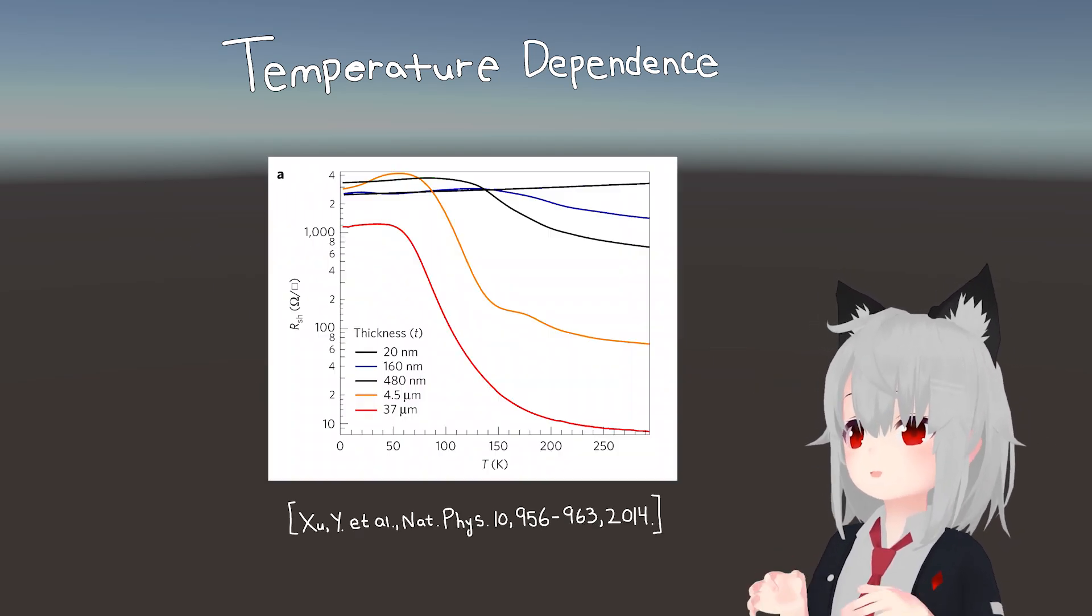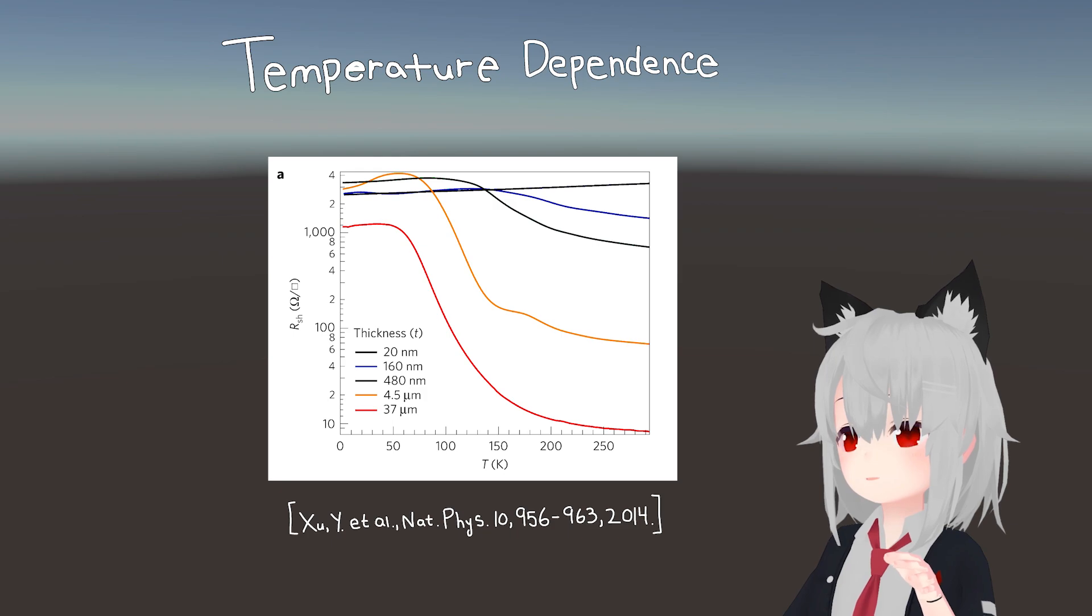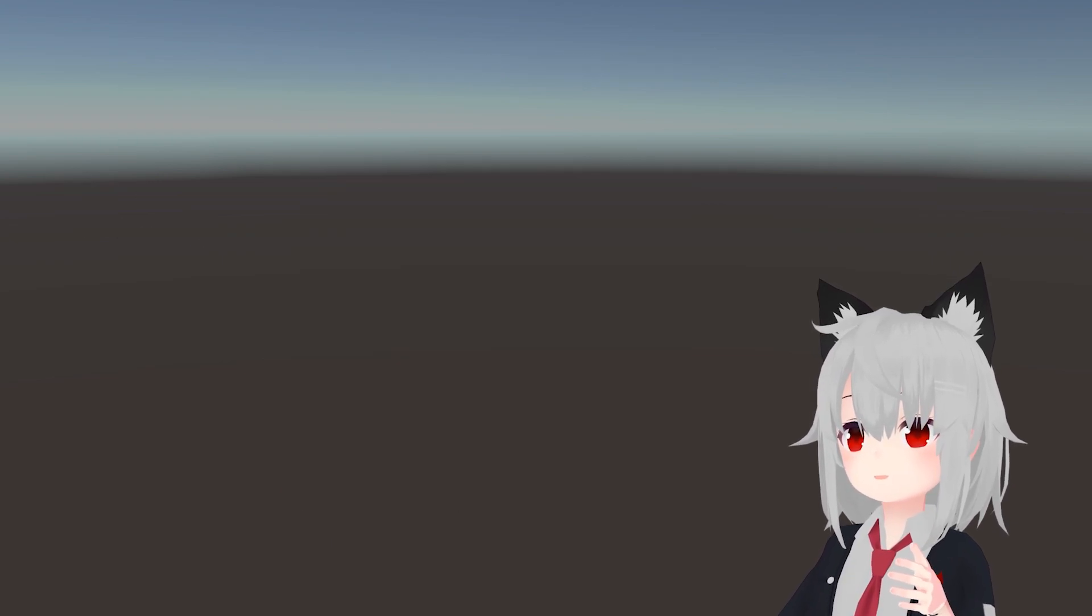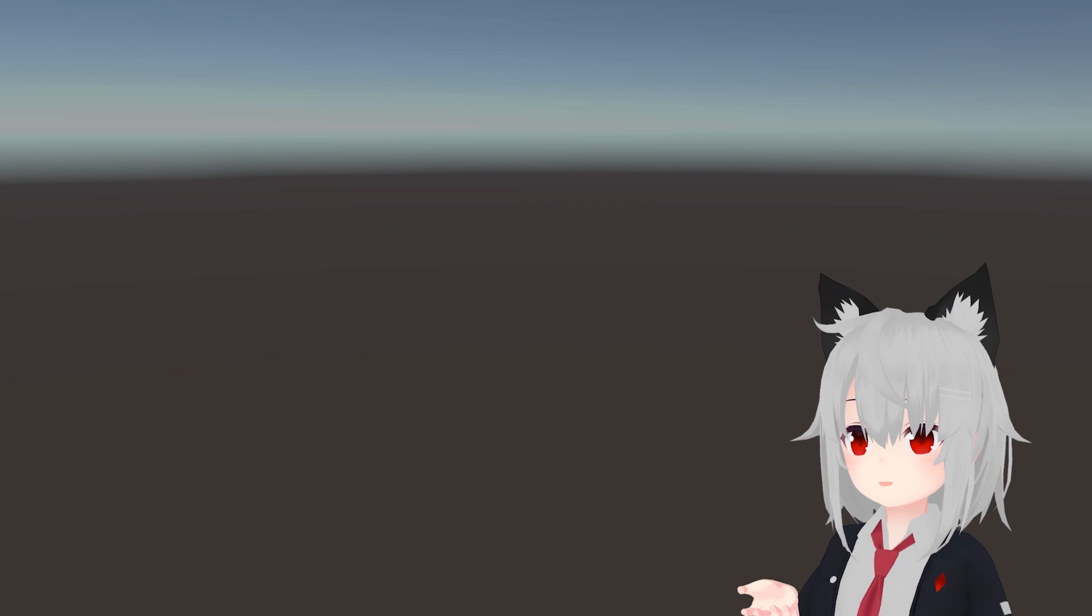In fact, this is exactly what was measured in the prototypical topological insulator, bismuth selenide. So that's already one hint at the existence of topological edge states.